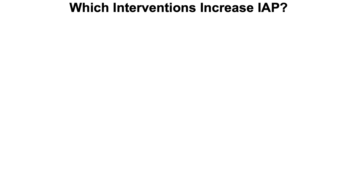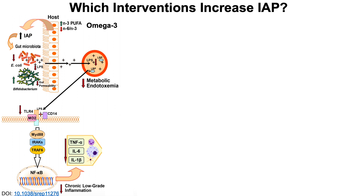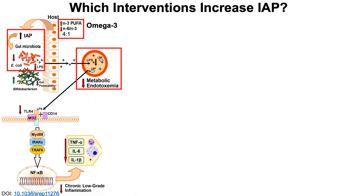Which interventions increase IAP? First, omega-3 fatty acids have been shown to increase intestinal levels of alkaline phosphatase. Using transgenic animals with increased omega-3 tissue levels and also direct fish oil supplementation, higher omega-3 levels induced changes in the gut microbiome: IAP levels increased, E. coli levels decreased, intestinal LPS decreased, gut permeability decreased, and the net effect was decreased levels of LPS in the blood — potentially less CD38 and more NAD.